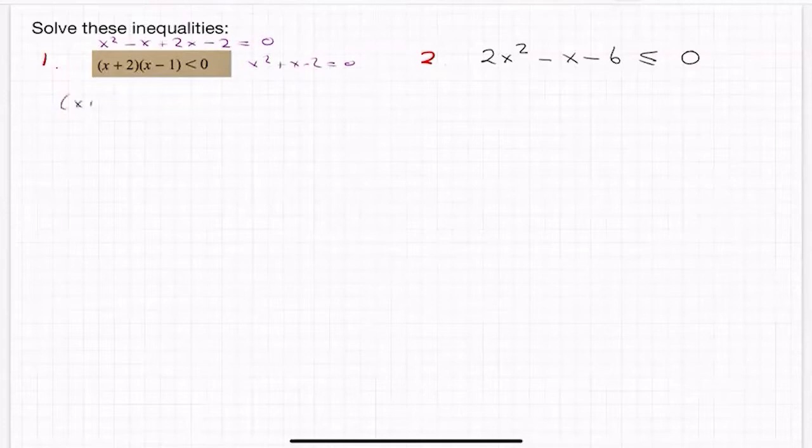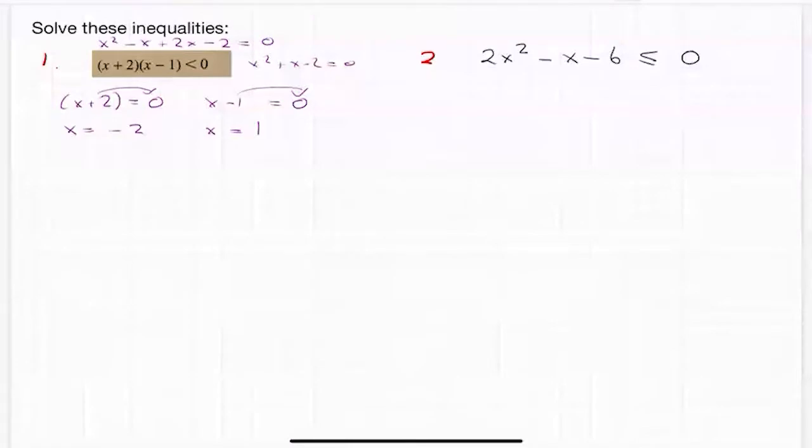And x plus 2 is equal to zero holds one of my roots, and x minus 1 holds my other root. So if I was to solve this, x is equal to minus 2. The same in this one, x is to one side, numbers to the other, x will be equal to one.